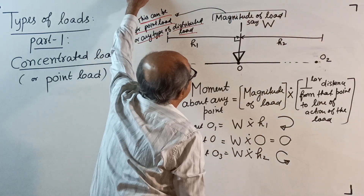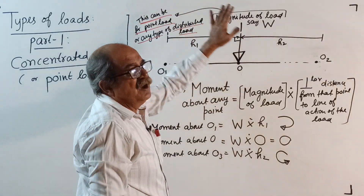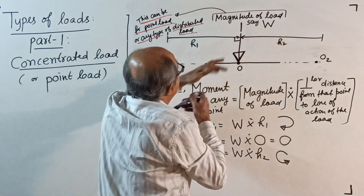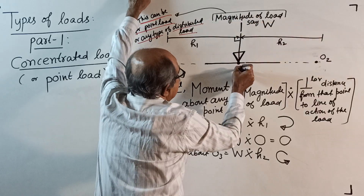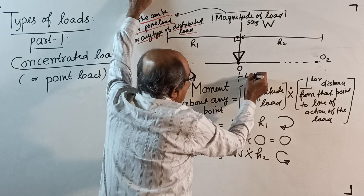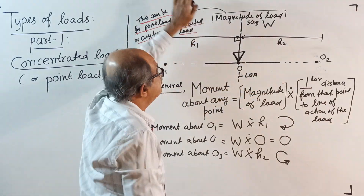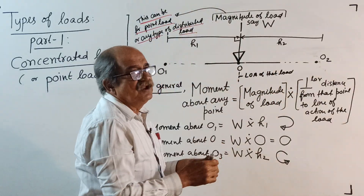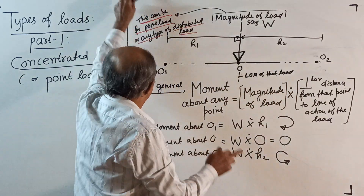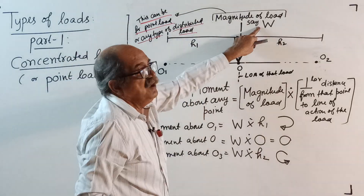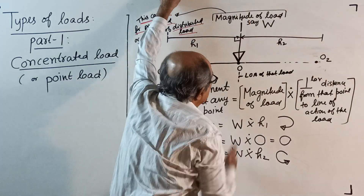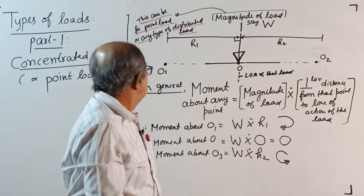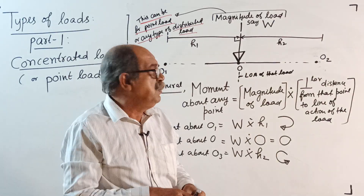Therefore, the magnitude of the load is W — it can be a point load, I am not specifying point load now. This is the magnitude, and this is the line of action of that load. One point is magnitude, line of action is here, and point of application — right now we are not bothered about that. Next: the most powerful — moment about any point.